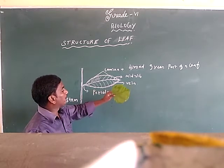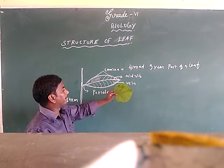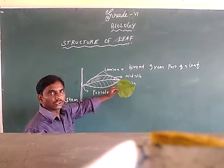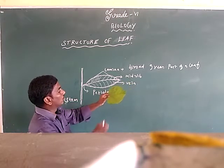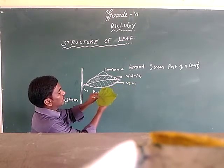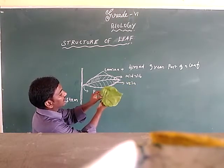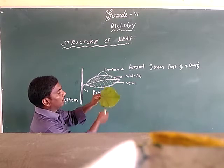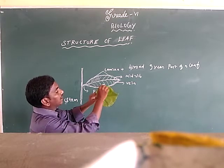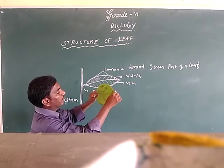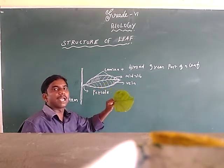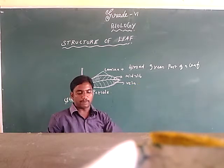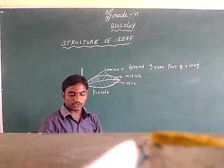Can you identify these parts of the leaf? This is the petiole, and this broad green part of the leaf is called the lamina.